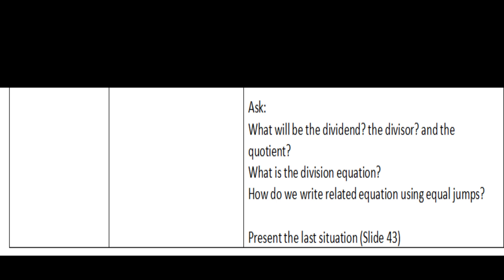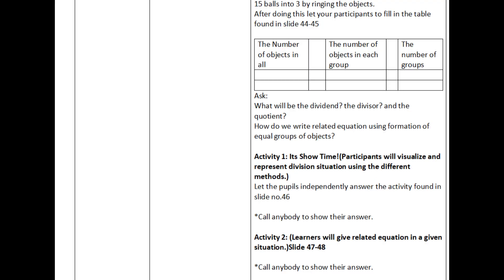Then present the last situation from slide 43: let the pupils draw 15 balls into 3 groups by circling the objects. After this, let pupils fill in the table from slides 44 to 45 — number of objects in all, number of objects in each group, and number of groups. Then ask: what is the dividend, divisor, quotient, and how to write the related equation using formation of equal groups of objects.